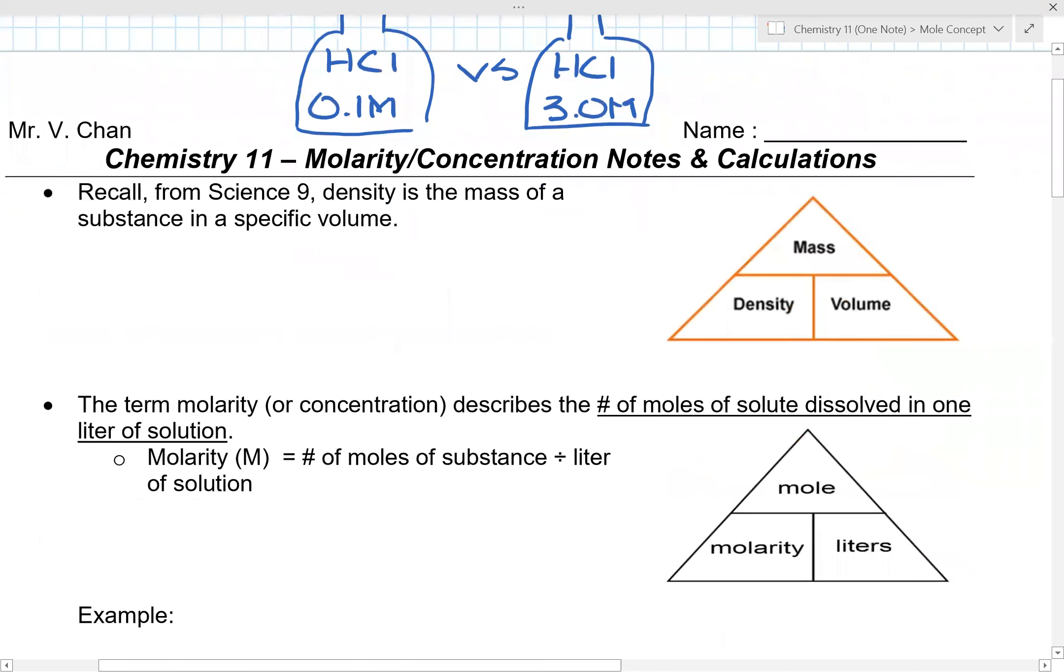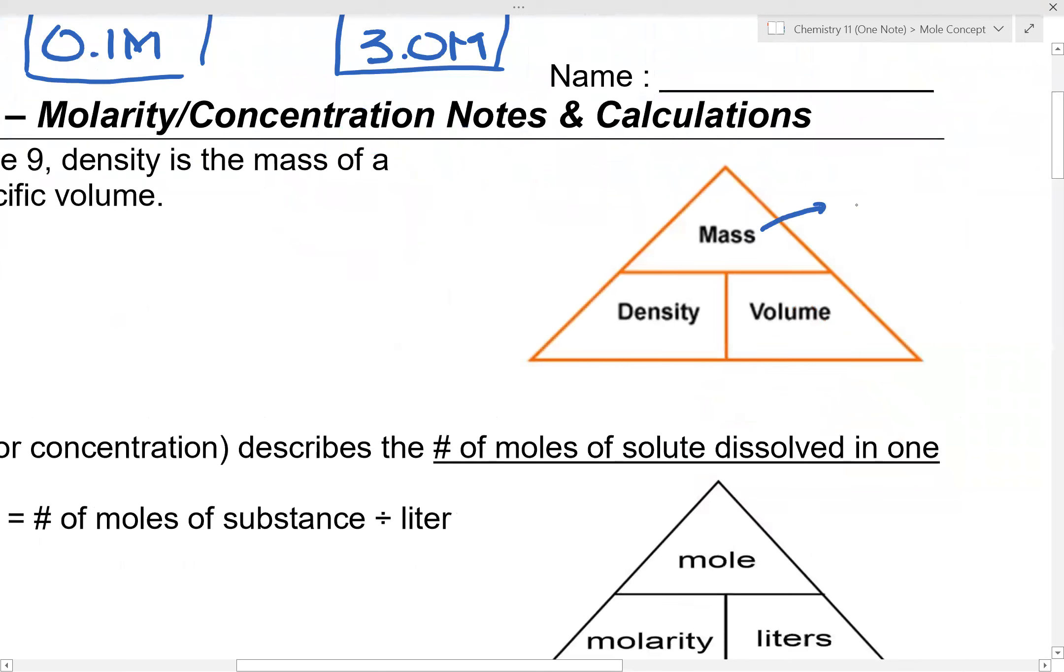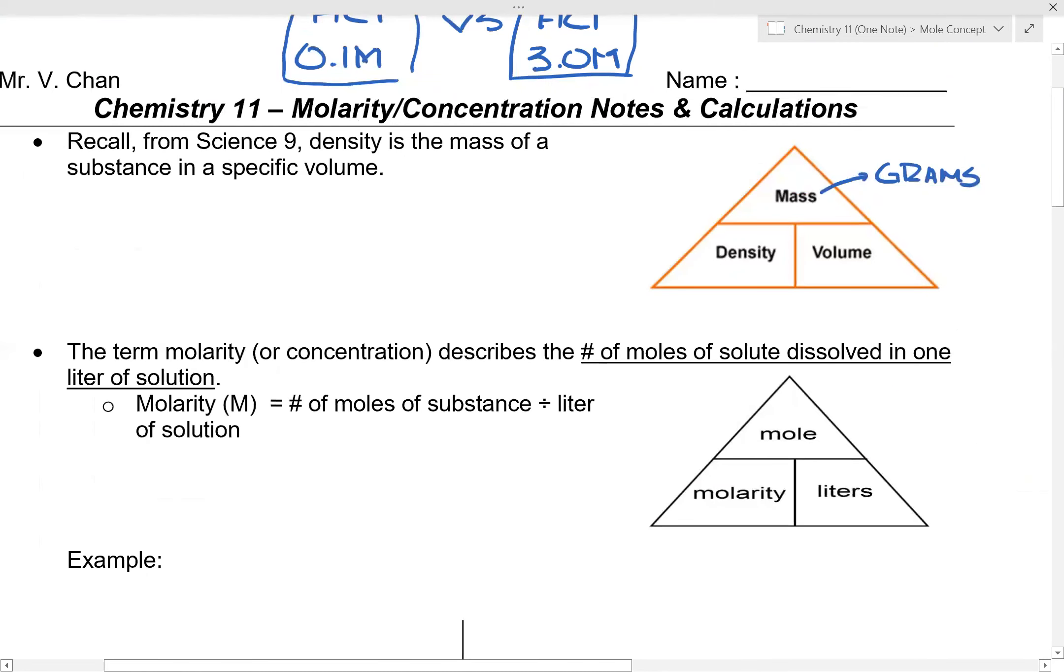Back in grade 9, you recall that density was mass divided by volume. To measure the density of something, we took the mass of the object in grams and divided it by specific volume. This unit of molarity is very similar to density, but instead of using mass or grams, we use the mole. You can see molarity is moles on top of the triangle over liters.